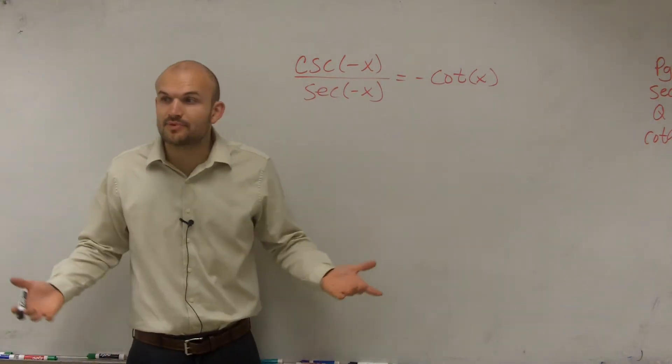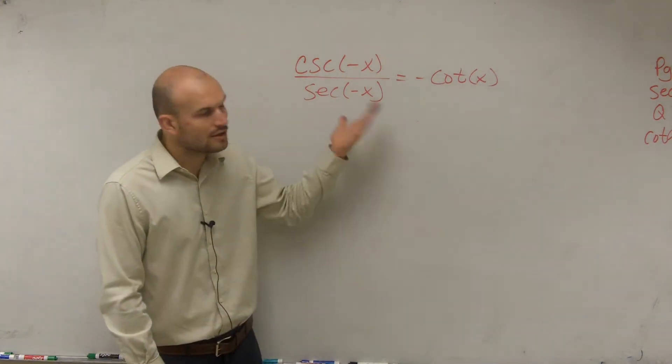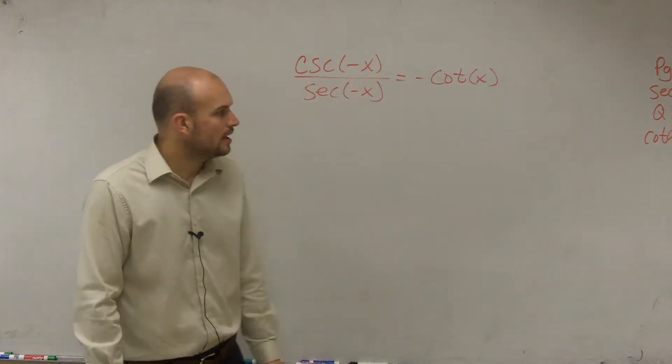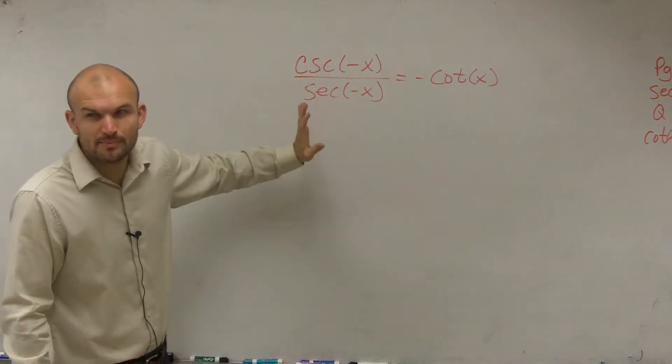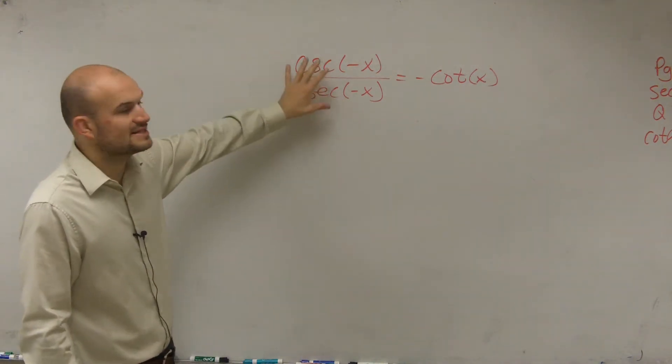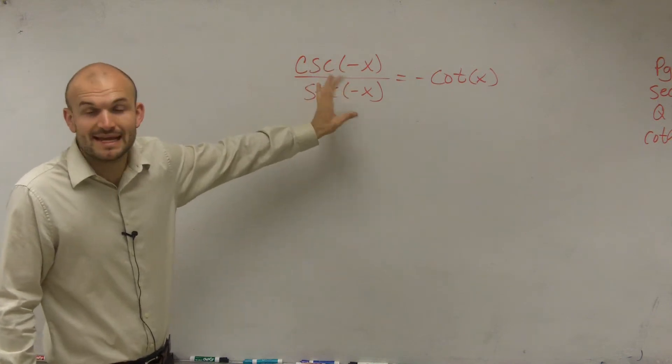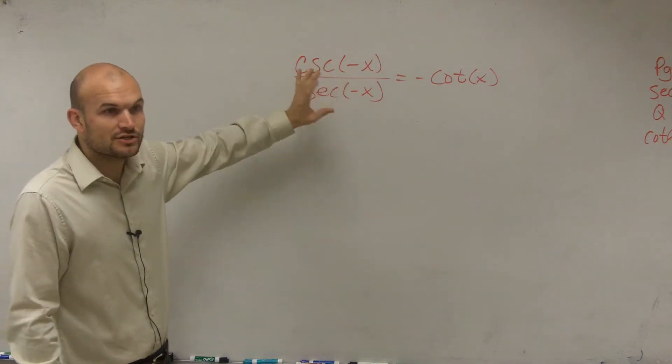So the first step we need to do is pick a side. Let's go and take a look at the left side. The next thing we need to do is apply operations. Well, we have division. But before I even get to apply my operations, I see that I can use my even and odd identities to rearrange these.